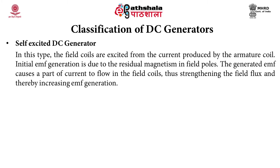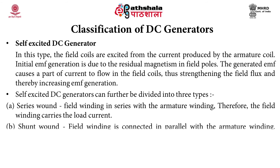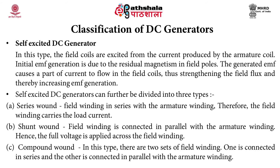In a self-excited DC generator, the field coils are excited from the current produced by the armature coil. Initial EMF generation is due to the residual magnetism in the field poles. The generated EMF causes part of the current to flow in the field coils, thereby strengthening the field flux and increasing EMF generation. Self-excited DC generators can be further divided into three types: series wound, shunt wound, and compound wound.